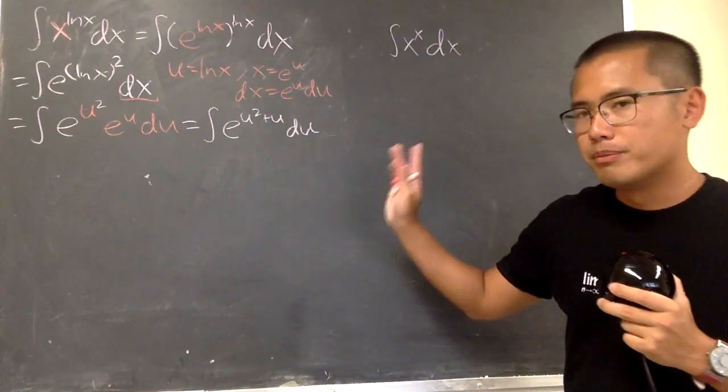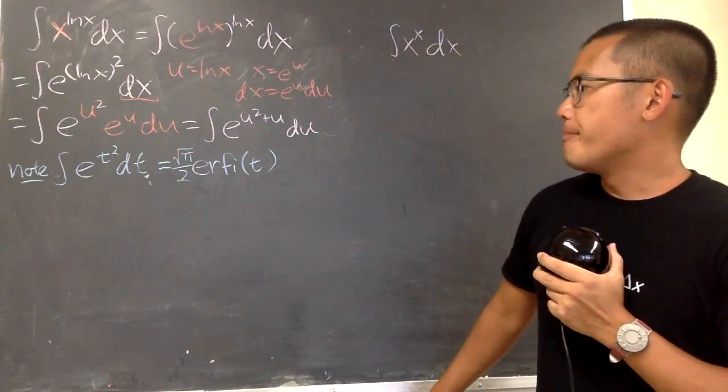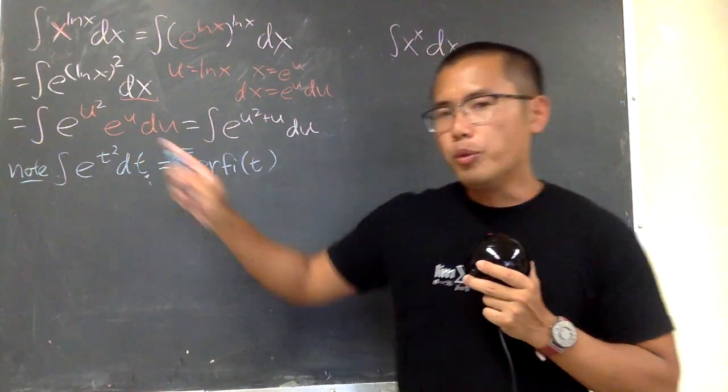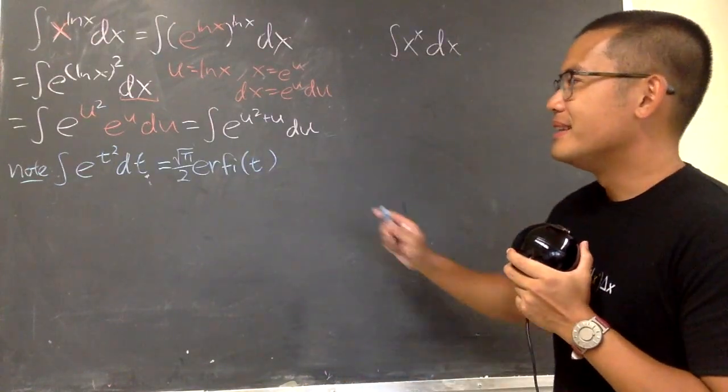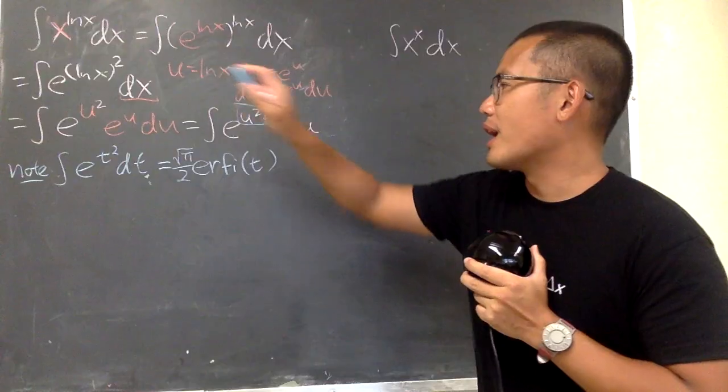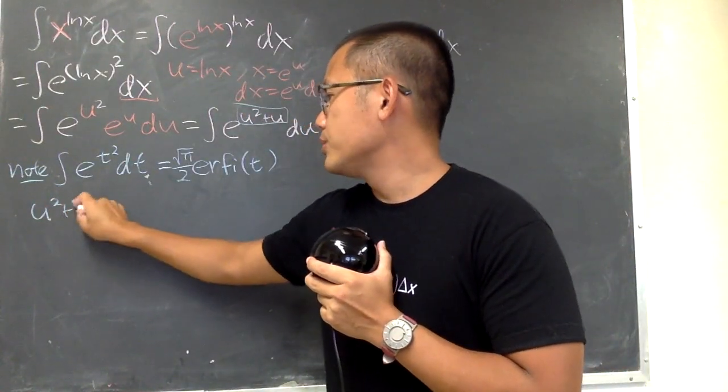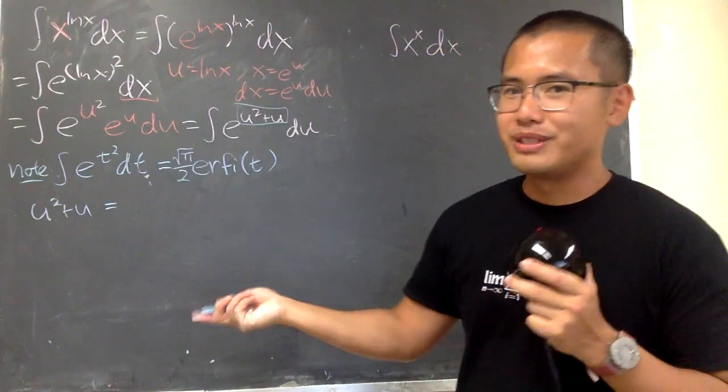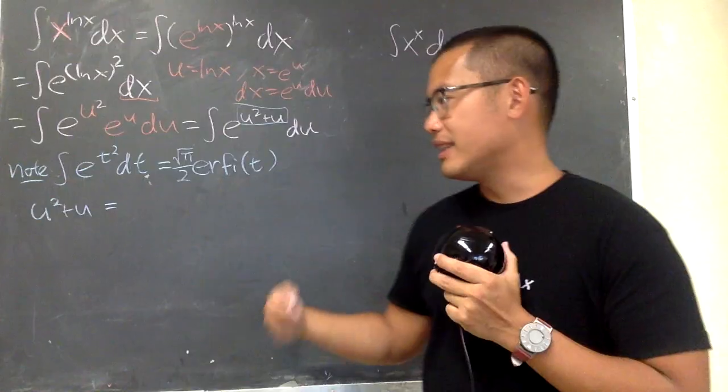This right here reminds us the imaginary error function. That would be great, because as you can see, this is almost that as soon as we complete the square. Therefore, let's look at this right here. When we have u squared plus u, let's just do the magic number. You take half of this and square that, and then subtract it after that.